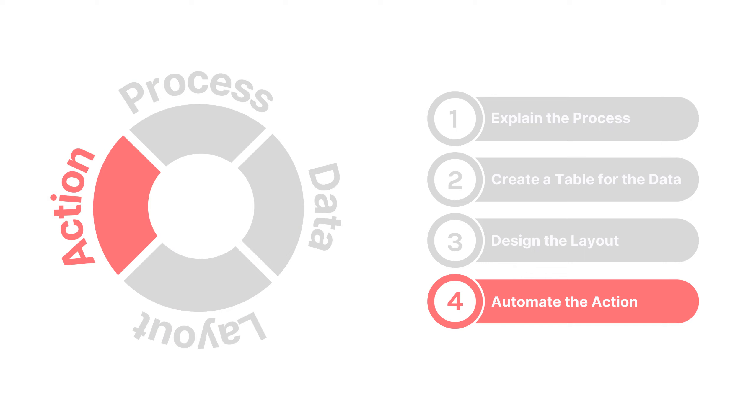Now that you have a layout to store and update the information, it's time to complete the process with automation. There are a ton of things you can automate, from sending emails, to generating documents, to using AI to answer questions, generating invoices, or creating to-do lists. This is the part that's going to be super specific to your process, so you'll likely need to do a little bit of investigation on what's possible.